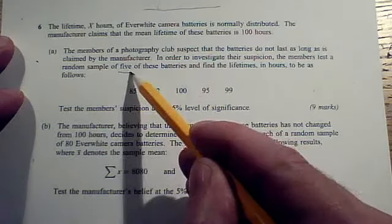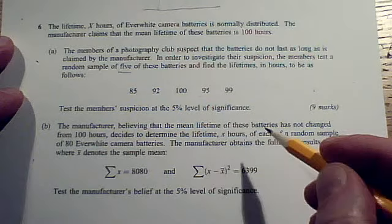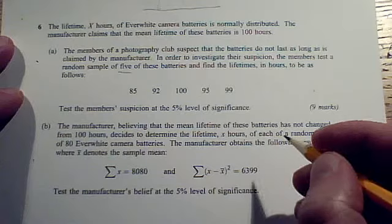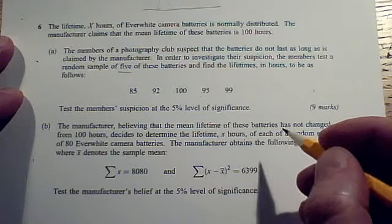In part A, we've got a sample of size 5, a very small sample, so it really matters whether you use Z or T. Make sure you make the correct selection.